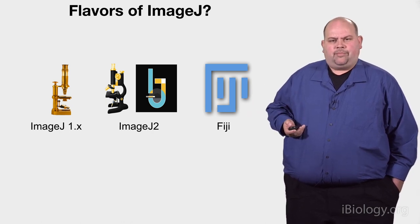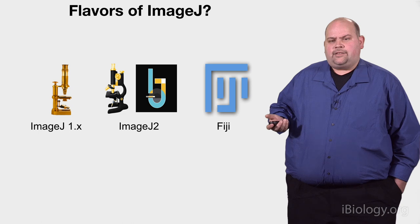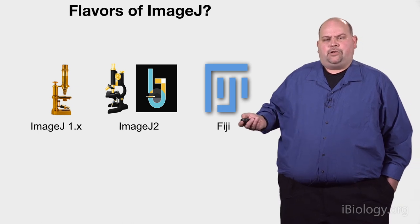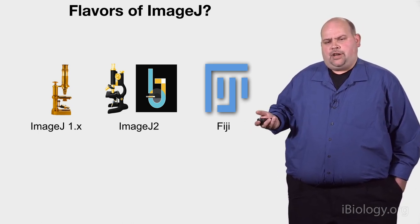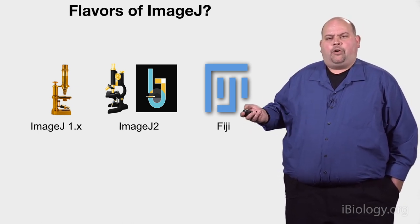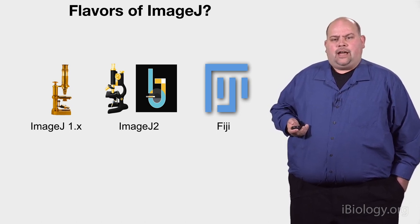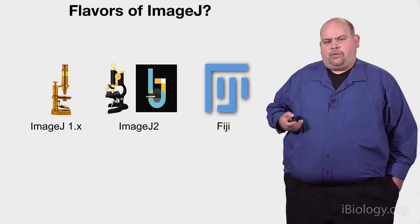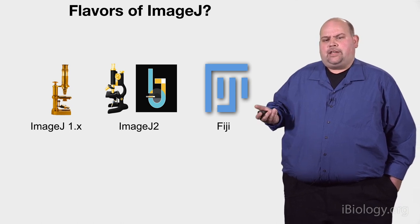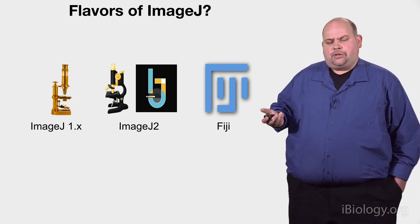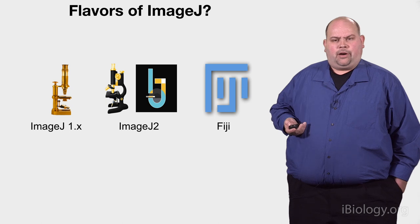Fiji is ImageJ 1 and 2 with batteries included. It's basically a way of getting all the goodness of ImageJ, but for our microscopy audience, allowing you to download it with active maintenance and updates. We recommend Fiji as the preferred version for viewers of this series, because it's really designed for microscopists.